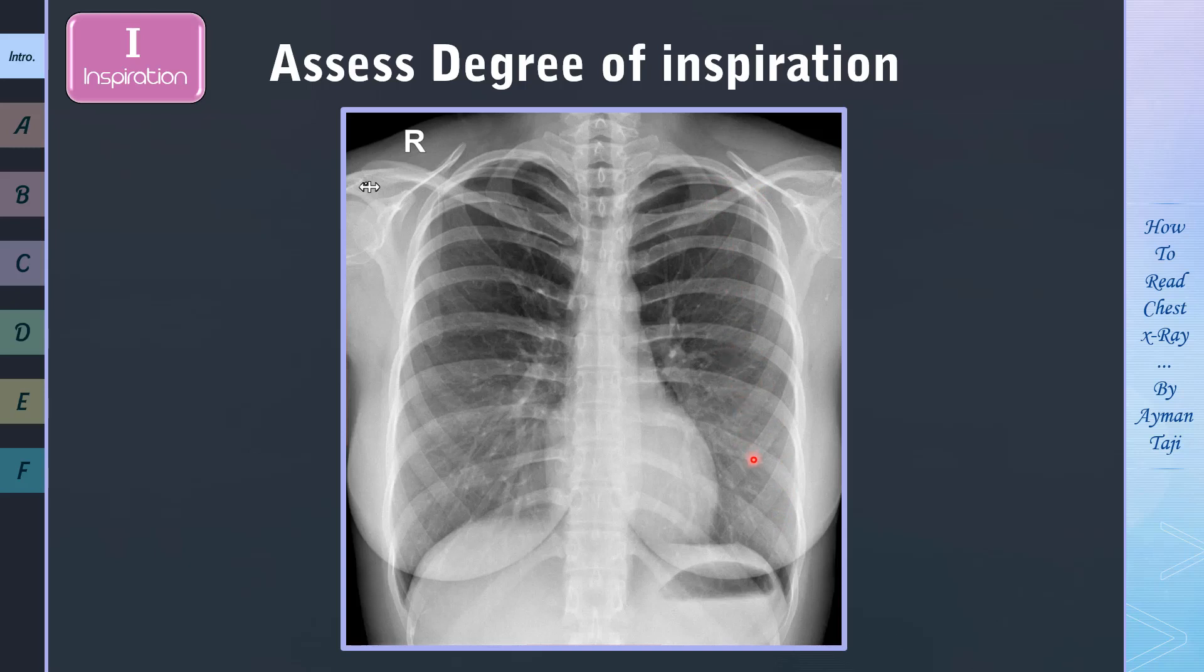So, let's take this normal X-ray as an example. Here is the first rib, here is the second one, here is the third one, and so on, 4, 5, 6, 7, 8, 9, and 10. So here we can count 10 posterior ribs above the left hemidiaphragm.